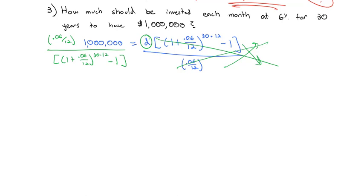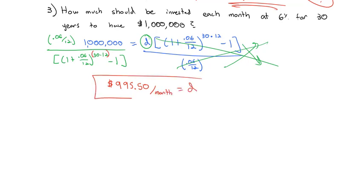I get something that looks really ugly, but I can just type it in my calculator as long as I'm careful to put the exponent in parentheses. When I multiply 0.06 divided by 12, times a million, divided by the quantity one plus 0.06 divided by 12 to the 30 times 12, minus 1, what we end up with is $995.50 per month is equal to the monthly deposit needed.